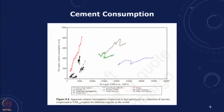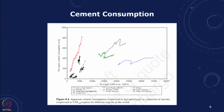A similar thing can be seen for cement — you can look at the different levels at which developing countries are growing. In these cases it is more or less saturating, at different levels, and looking at global demand normalized, you can see there is overall growth.